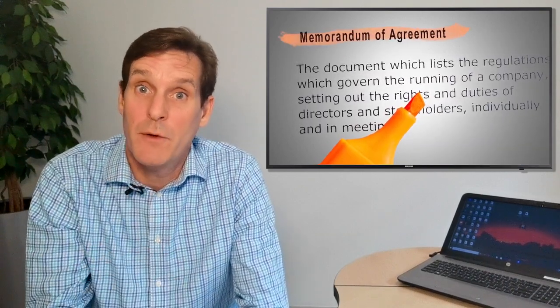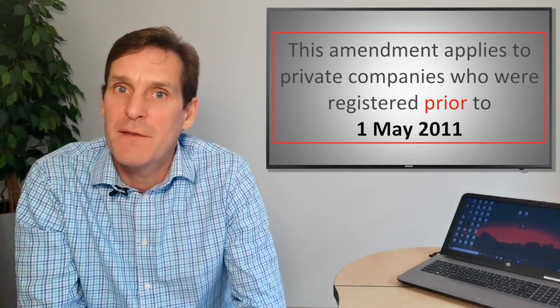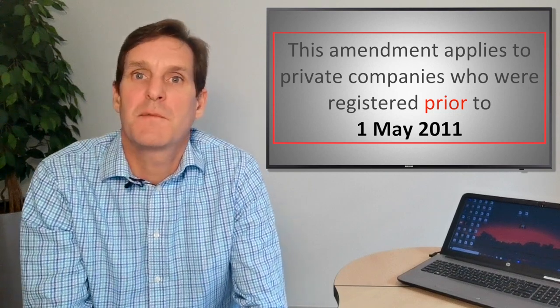The first option is converting the old Articles of Association and Memorandum of Agreement into the Memorandum of Incorporation. This amendment applies to private companies who were registered prior to the 1st of May 2011. These articles refer to the old Companies Act where private companies required annual audits, but this is no longer a requirement. The authorized shares in the articles were also par value shares, usually fixed at R1 each. To bring this in line with the new Companies Act, the MOI needs to be adopted. This is a two-step process whereby the shares must first be converted to non-par value shares and then the adoption of the MOI can proceed.